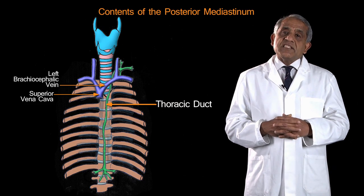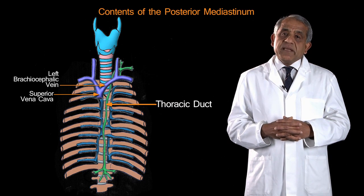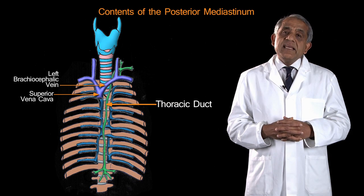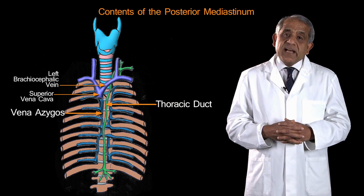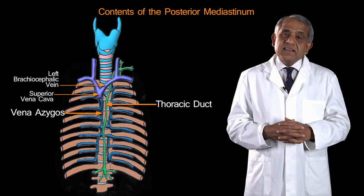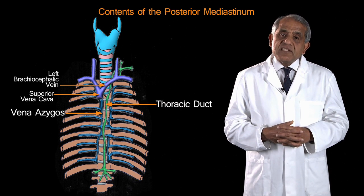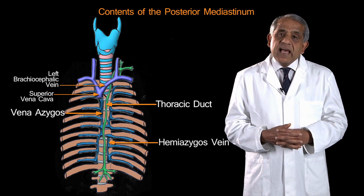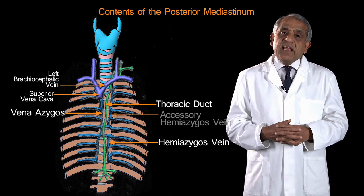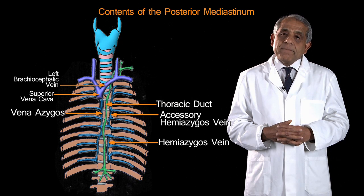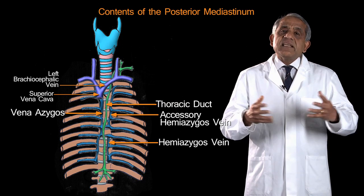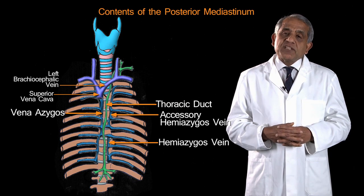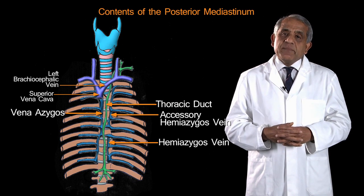Also there are veins in the posterior mediastinum. These are the vena azygous on the right side, and the corresponding veins on the left side are the hemi-azygous and the accessory hemi-azygous veins. These are the important structures in the posterior mediastinum.